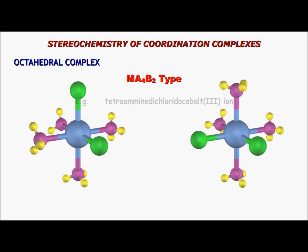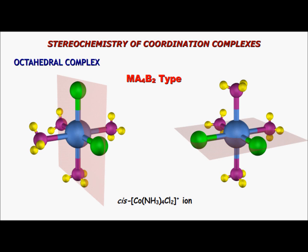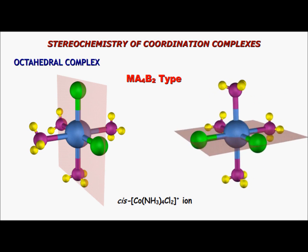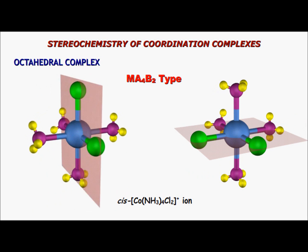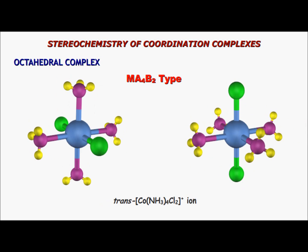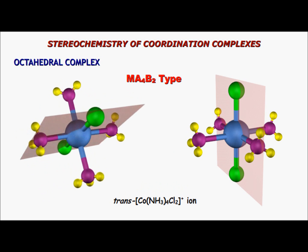In octahedral geometry, all six ligands are arranged symmetrically. The cis isomer, where two similar ligands are adjacent, has a plane of symmetry and therefore no optical isomer. The trans isomer, where similar ligands are on opposite sides of the central metal atom, also has a plane of symmetry and therefore no optical isomer.